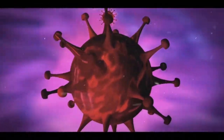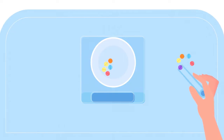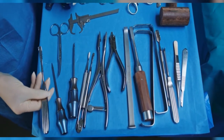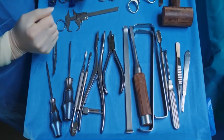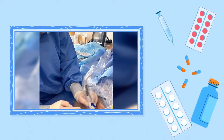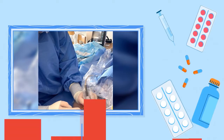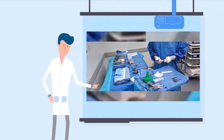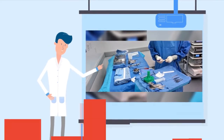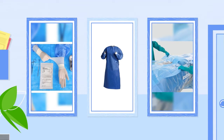Aseptic techniques, or sterile techniques, are a set of procedures used to prevent the introduction of microorganisms into a sterile field. This is a fundamental practice in healthcare settings to ensure patient safety and prevent infections. This is particularly important when handling central lines, as any contamination can have serious consequences. When a central line is being inserted, it is crucial to maintain a sterile field, which involves using sterile gloves, gowns, and drapes.